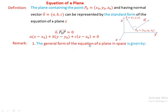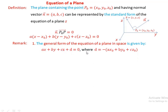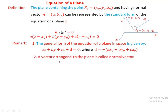Remark: the general form of the equation of a plane in space is obtained by expanding the standard form. Expanding a(x − x-naught) + b(y − y-naught) + c(z − z-naught) = 0 gives the general form ax + by + cz + d = 0. Also note: a vector orthogonal to the plane is called a normal vector; any vector lying on the plane is perpendicular to the normal vector.